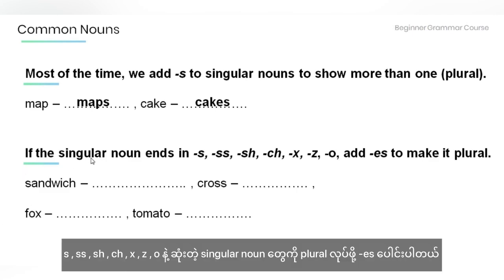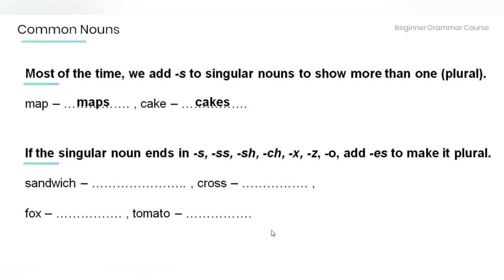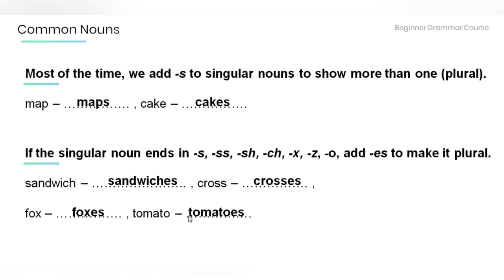If the singular form ends in S, SS, SH, CH, X, Z, or O — add ES to make a plural. The word sandwich? Sandwiches. Cross? Crosses. Fox? Foxes. Tomato? Tomatoes.